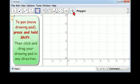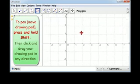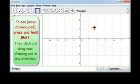We could use the Move Drawing Pad tool to pan, but we want to do this without changing our active tool. So we press and hold shift, and the important thing is not to get on the axes. Click and drag the drawing pad anywhere you want it to go.